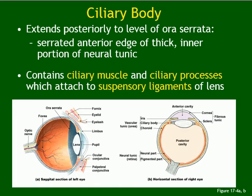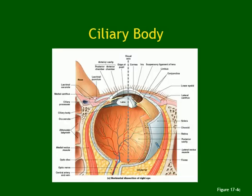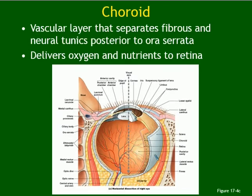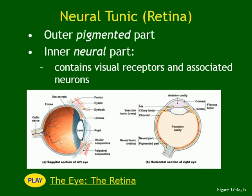For the ciliary body summary: ciliary muscles, ciliary processes, and suspensory ligaments. The choroid's most important feature is that it is part of the vascular layer — providing blood supply, nutrients, and oxygen — and it is dark to ensure the retina only receives light from the pupil. The neural tunic is the retina, the inner layer, and this is where the visual receptors are located.